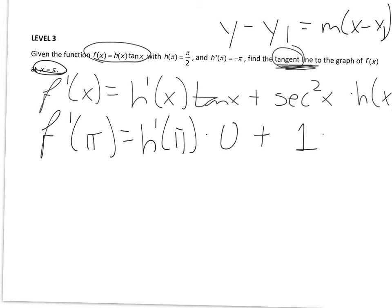And then I have h of pi. Well, I'm told h of pi is equal to pi over 2. So now to finish, h prime of pi is negative pi from the information above, times 0, plus 1 times pi over 2. Final answer, pi over 2.